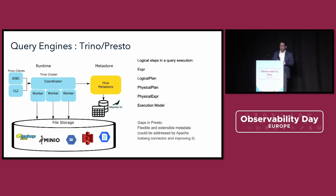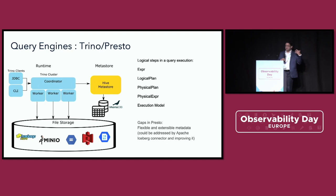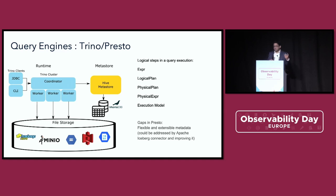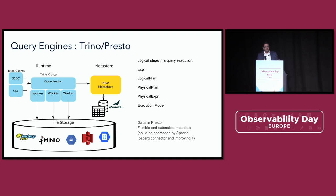Another option is Presto — a distributed query engine based on SQL that handles distributed queries very well. It has the concept of coordinators and workers, and a resource manager. I can deal with diverse, distributed, heterogeneous data through a huge number of connectors that Presto supports. I can connect to all kinds of data, federate my query, send different queries to different connectors and workers, and then bring all the data back and aggregate it into a unified query. That's where Presto works very well.